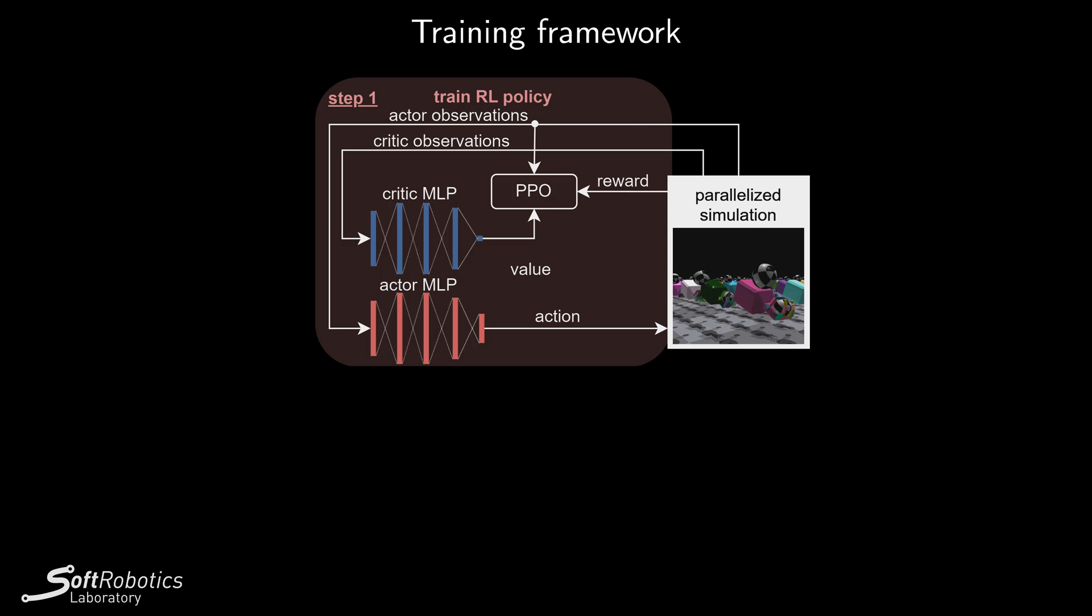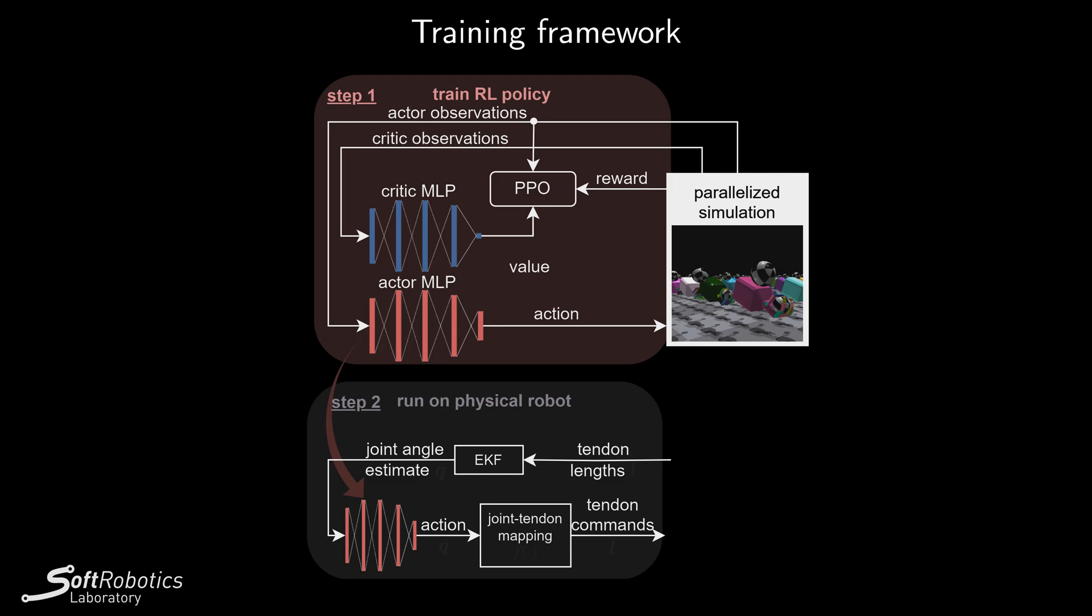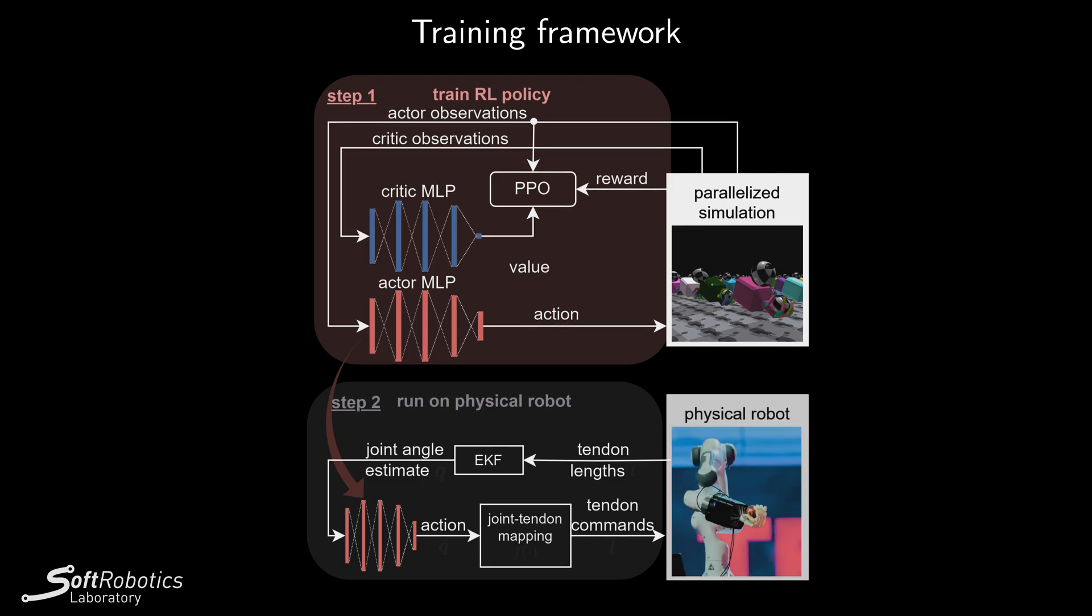This is our RL pipeline. We simulate multiple robot hands in a GPU-based simulator to train a policy with the PPO algorithm. It uses an asymmetric actor-critic framework so that the actor works with only physically measurable observations. Then, we export the trained policy to the real robot and run it in a closed-loop manner.